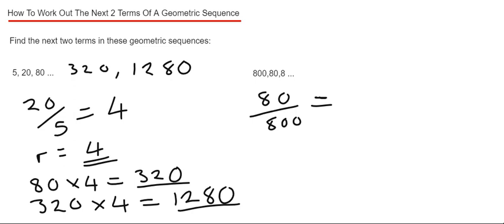You could work this out in your calculator, or you could just simplify the fraction. If we divide by 10, we get 8 over 80, and then divide by 8, we get 1 tenth. So our common ratio is 1 tenth.